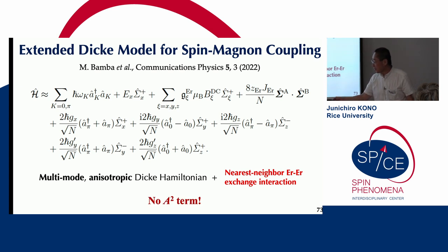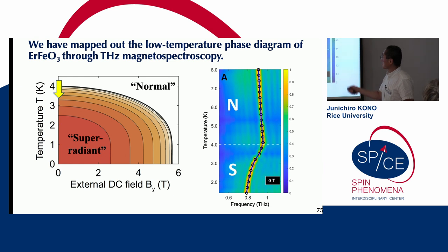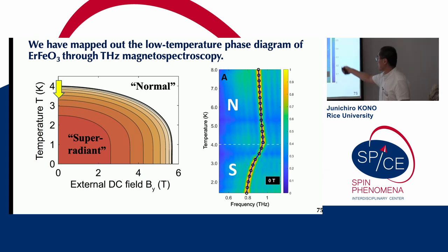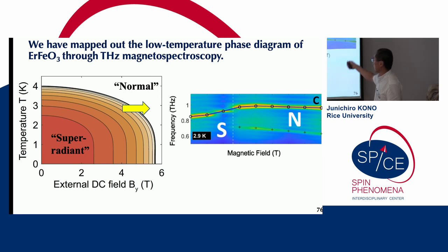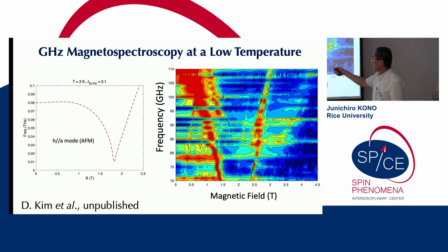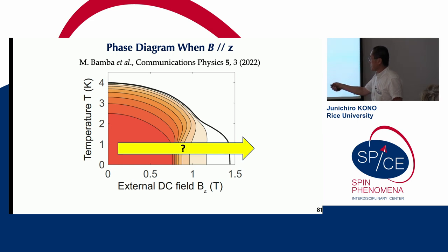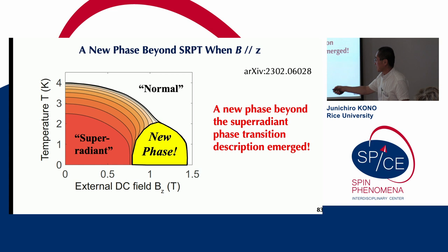Most importantly, there is no A-squared term, so we don't have to worry about the no-go theorem predicted for the Dicke phase transition. We have terahertz magneto-spectroscopy experiments, and when we go through this phase transition we see a kink in the data. We have a super-radiant phase and a normal phase, and also microwave magneto-spectroscopy data supporting this. When the magnetic field is along the Z-axis, we observe this new phase.